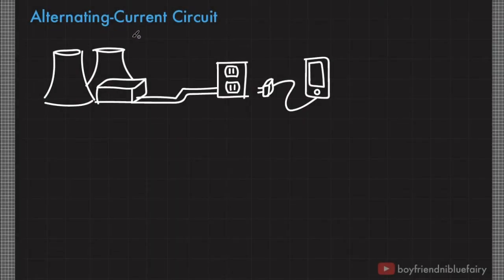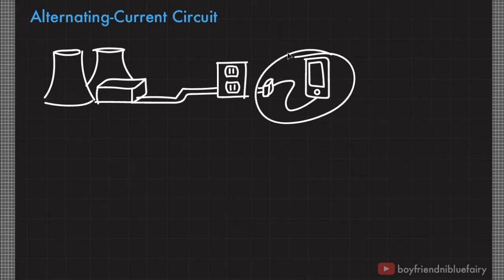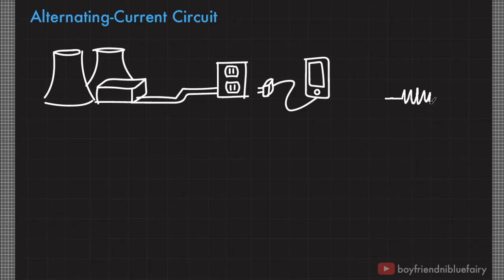Did you know that the current delivered to our homes from electric power plants is actually in the form of alternating current? For example, this smartphone receives an alternating current from the outlet, but it has a charger with a separate internal circuit that converts the alternating current to a direct current. For now, let's represent this system with a simple resistor and the power plant as an AC generator.